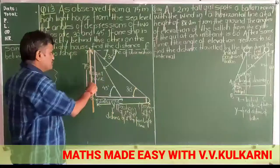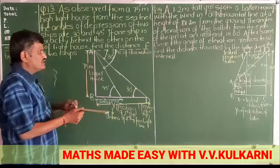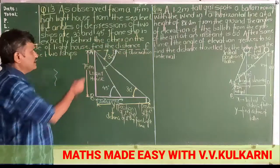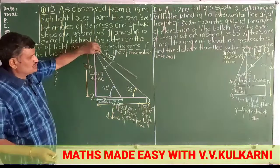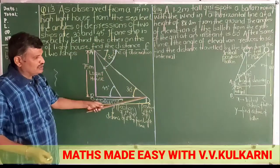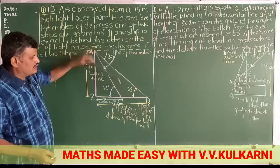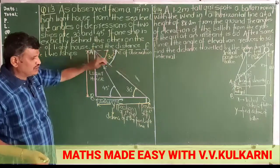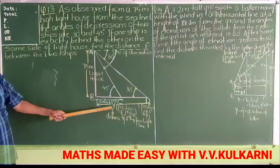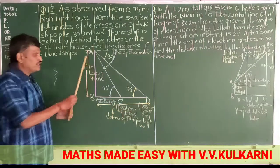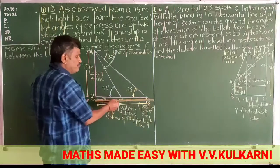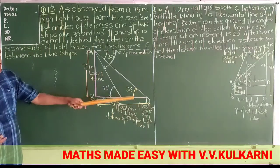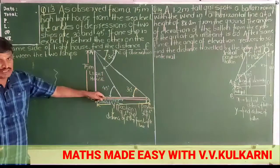The height of the lighthouse is 75 meters. This is the line of observation. When a person is standing at the top, do ships dikhae de raha hai — ek ship c point per, doosra ship d point per. Lighthouse perpendicular ka kaam kar raha hai, paani jo hai woh base ka kaam karna hai, aur yahan imaginary line hai. Toh, ek dusre ke pichhe pichhe hai.